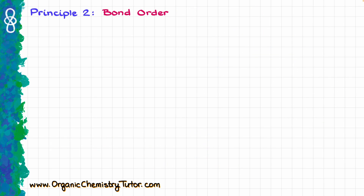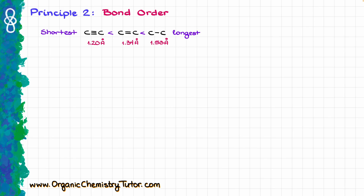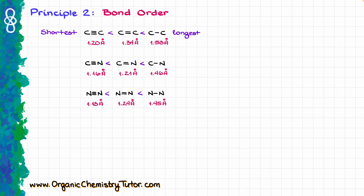Moving on, the next principle is bond order. Generally speaking, triple bonds are the shortest, double bonds are a little bit longer, and single bonds are the longest. You see this pattern across different elements as well. For example, with carbon-nitrogen or nitrogen-nitrogen bonds, the triple bond is the shortest while the single bond is the longest. Taking atomic size into consideration, nitrogen is slightly smaller than carbon, so a nitrogen-nitrogen bond is a little bit shorter than the corresponding carbon-carbon bond.